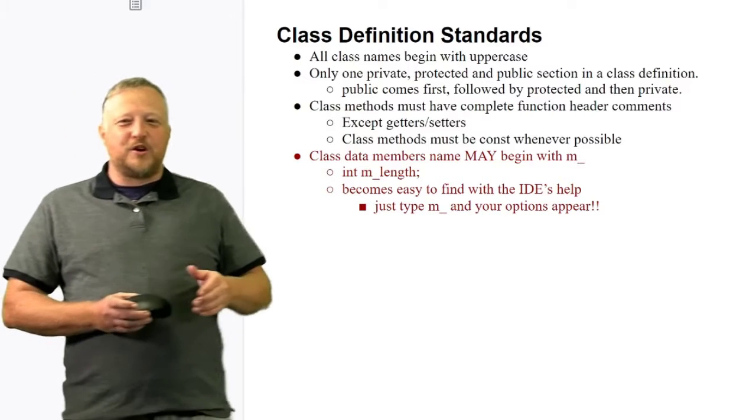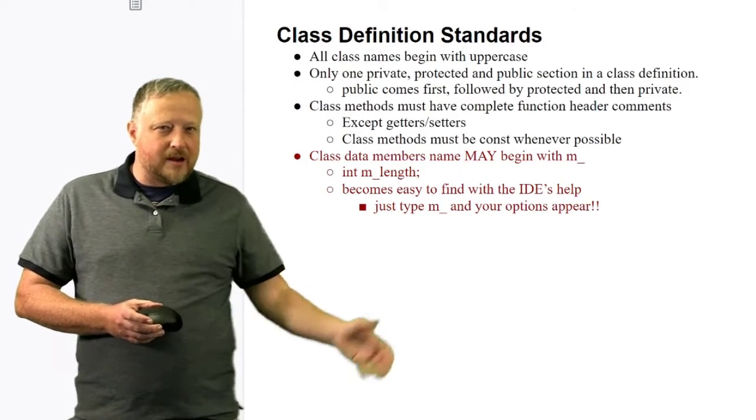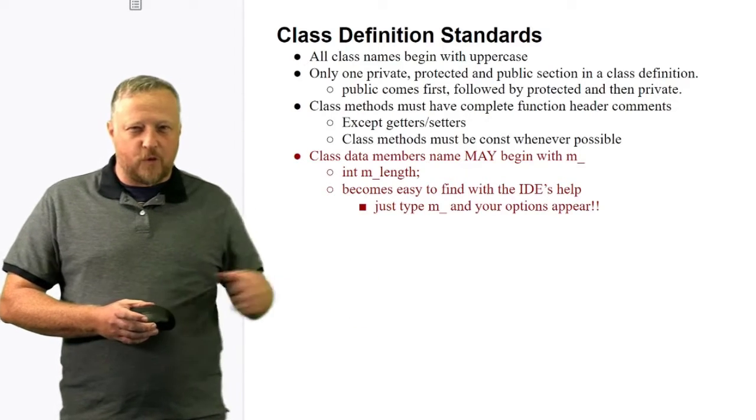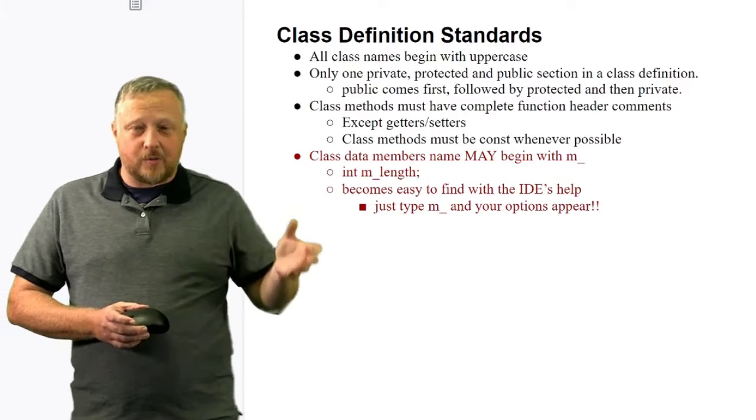Class methods have complete function header comments. We're going to show you a little bit more of that later on, and hopefully an example pops up as well. Except for the setters and getters, because you know what they're doing—the name of the function tells you exactly what it is.